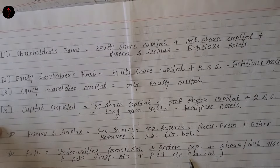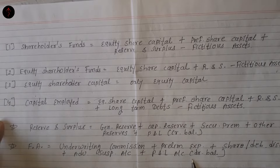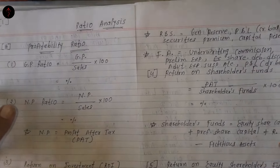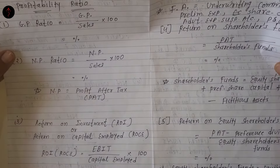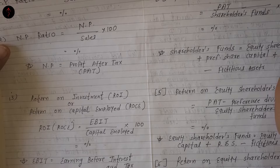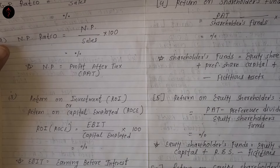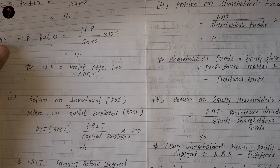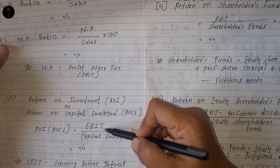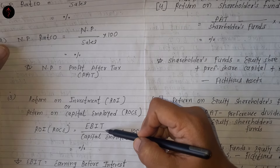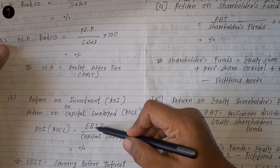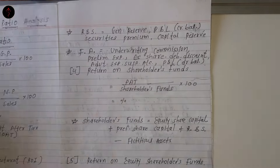These four — shareholders' fund, equity shareholders' fund, equity shareholders' capital, and capital employed — आपको हमेशा याद रखने हैं. Now back to profitability ratios — GP और NP की बात हो गई. Return on investment and return on capital employed — यह ratio दिखाता है कि आपने जितना भी capital employed किया है अपने business में, उसमें आप कितना return कमा रहे हो. That's why it uses EBIT — earning before interest and tax.